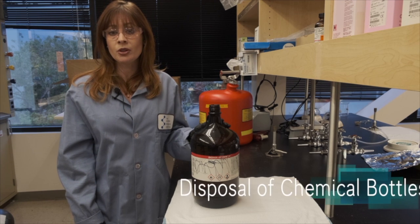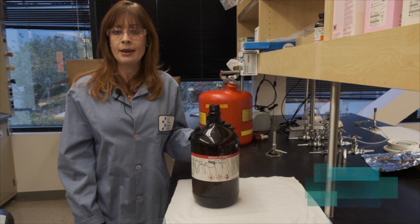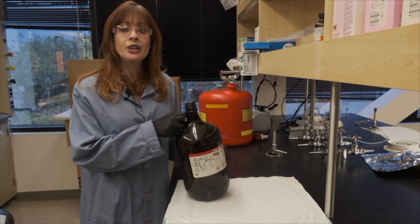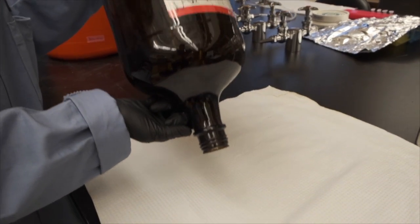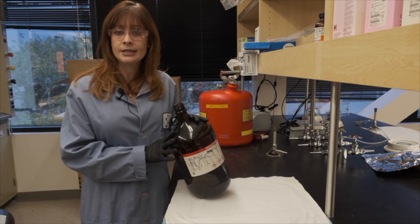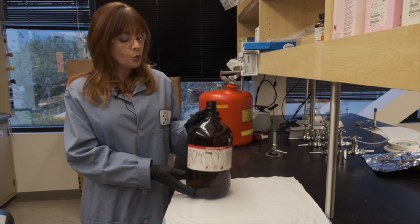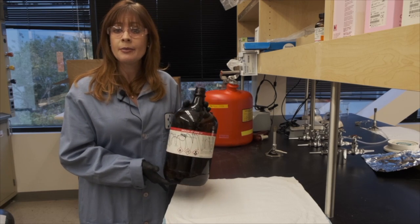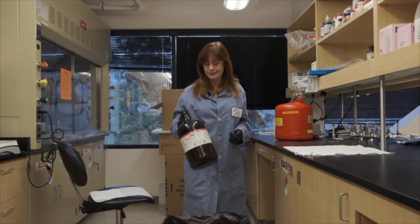Before you dispose of any chemical container in the regular trash, you want to make sure that it's completely empty. The term California empty means that if you invert the bottle, no pourable liquid comes out. Then it's ready for disposal. If there is residual liquid left inside, pour it into a hazardous waste container before disposing of the bottle. Once you verify that the bottle is completely empty, go ahead and deface it and then put it in the glass box for disposal.